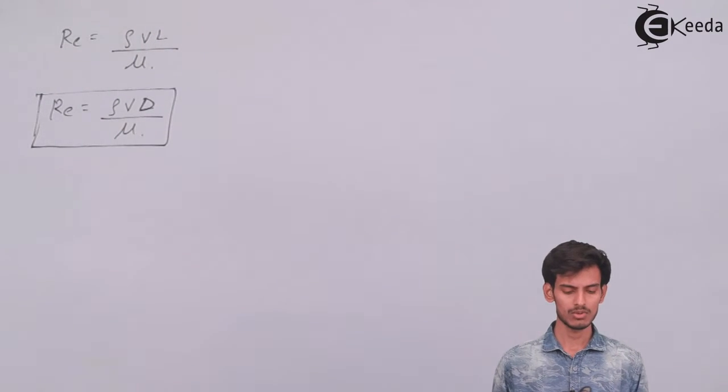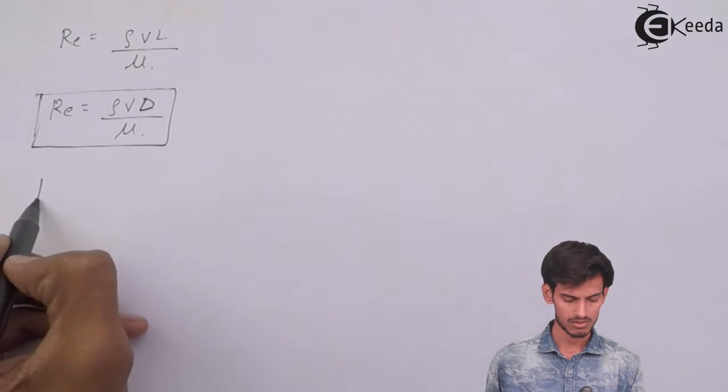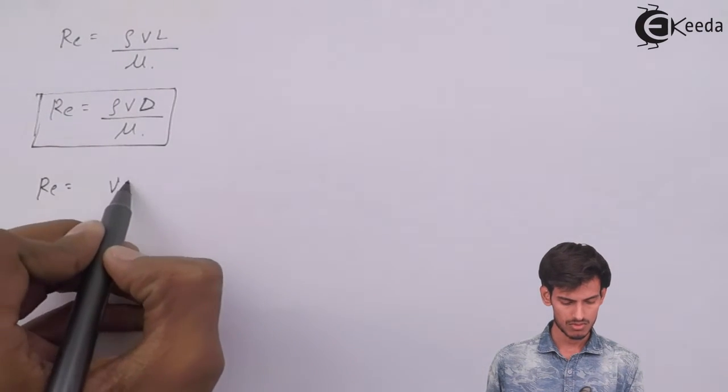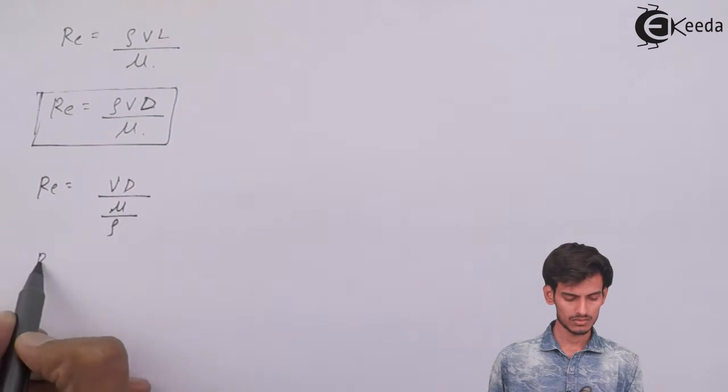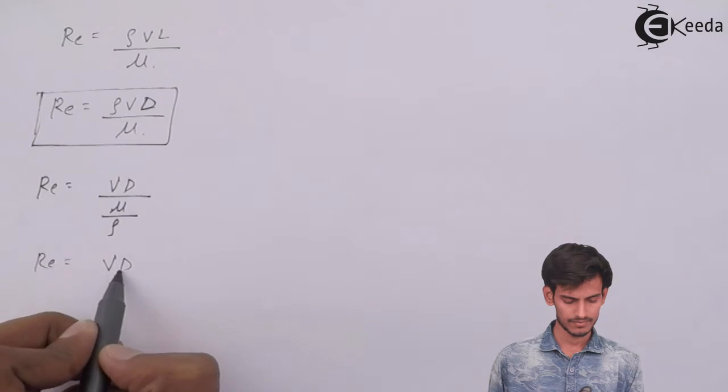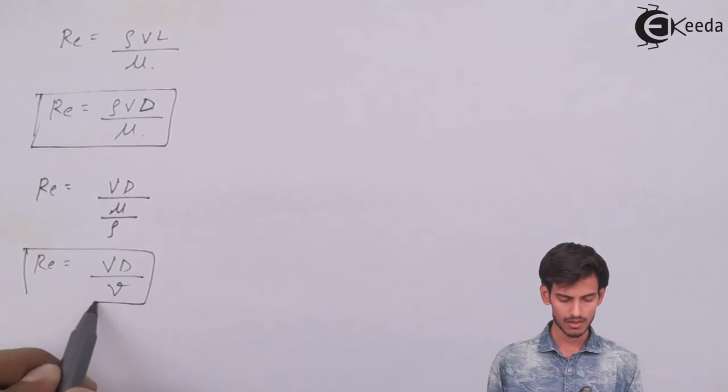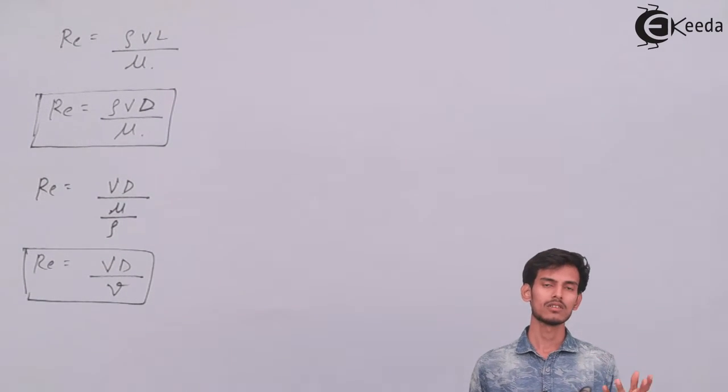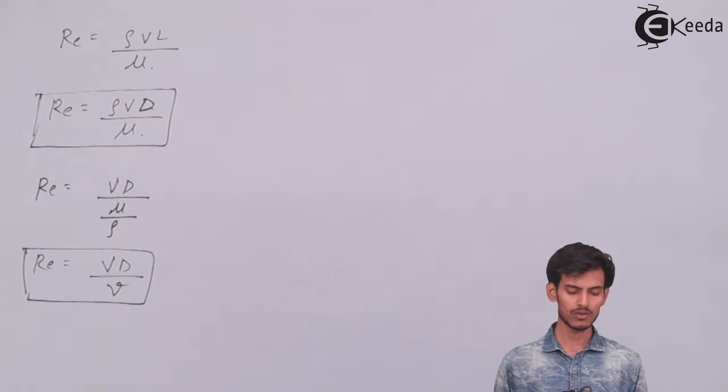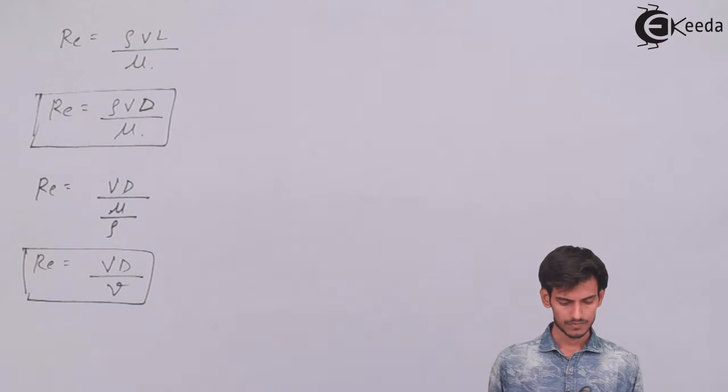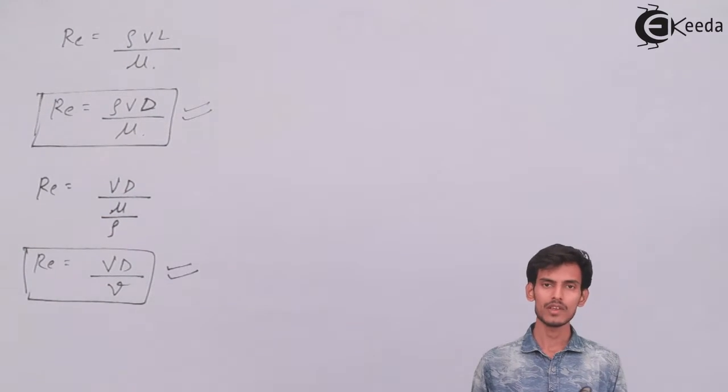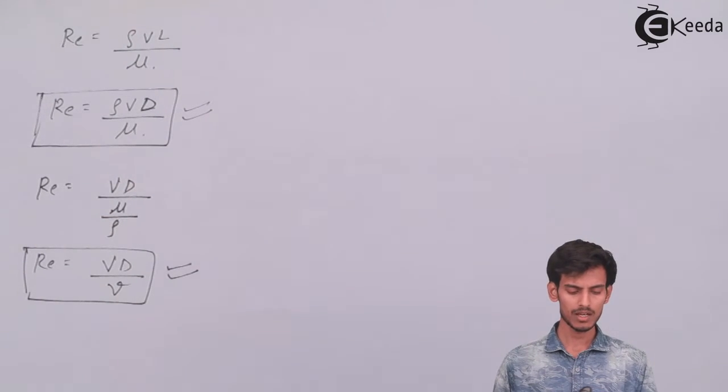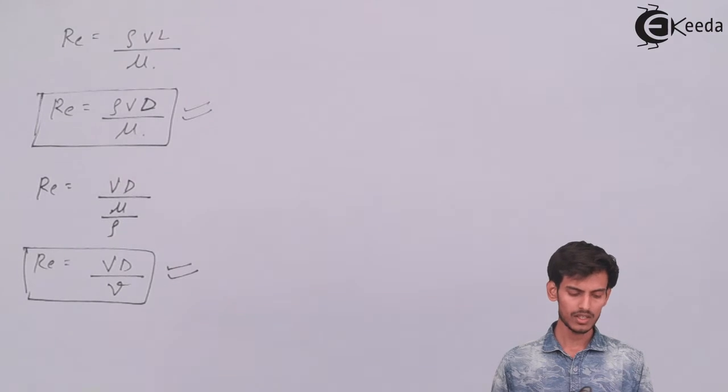The formula is ρvD/μ. There's one simple modification you can make and write another formula for Reynolds number. I've brought the ρ term into the denominator and μ upon ρ will give you ν. So there are two ways to write Reynolds number: ρvD/μ or vD/ν.